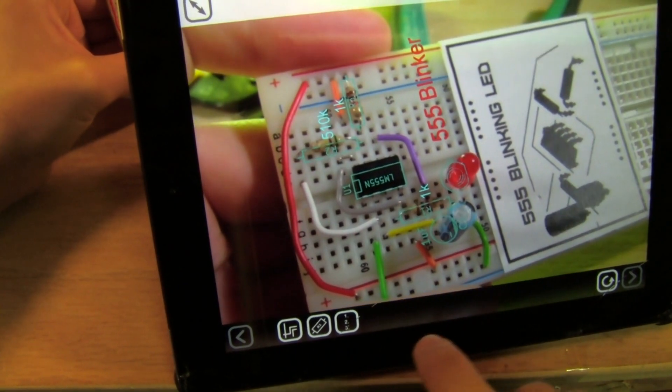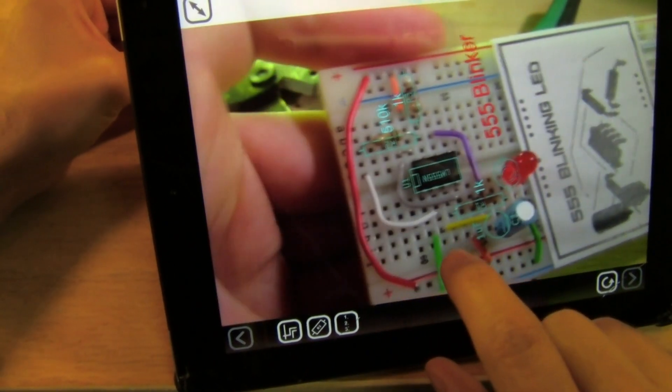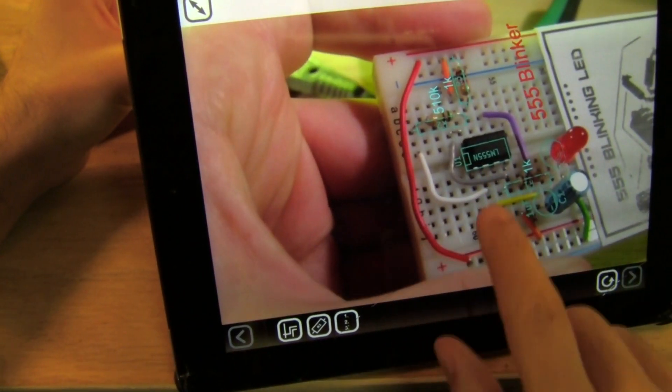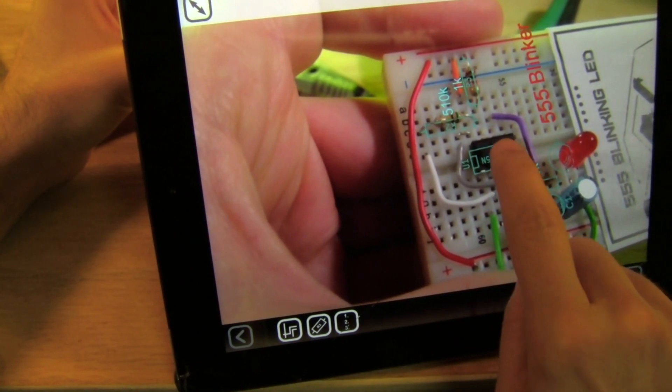Another thing I can do with this part overlay information is get some more information by touching the part on the screen. So let's do this U1.